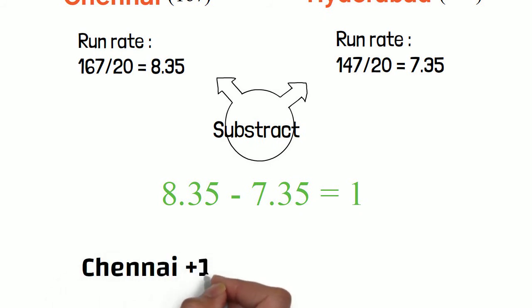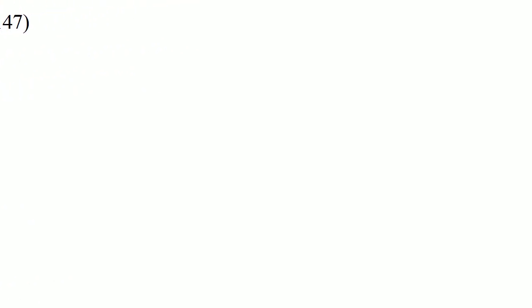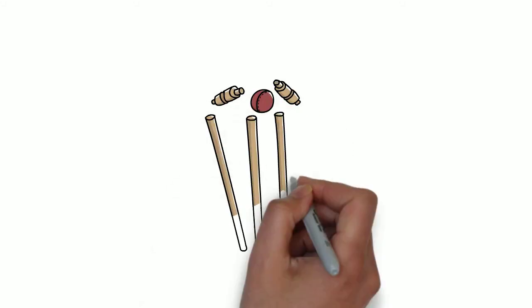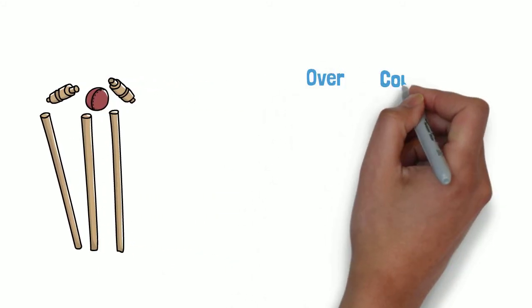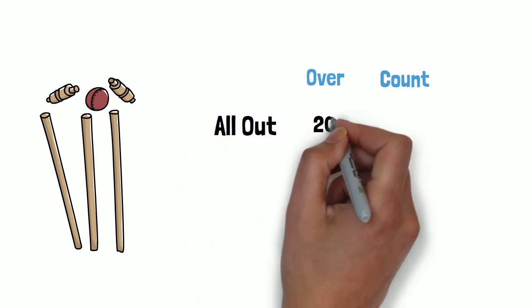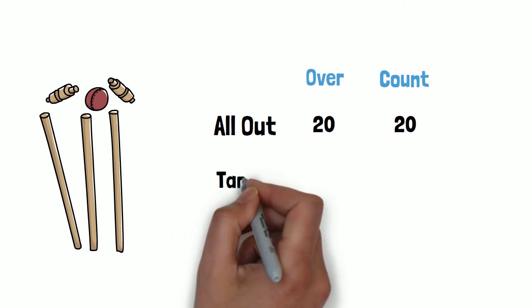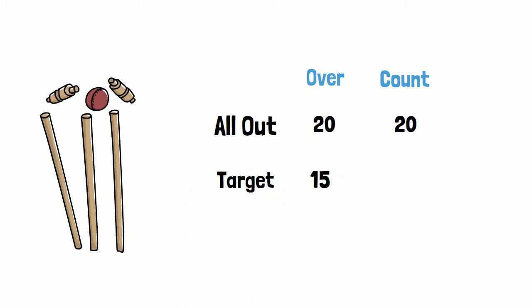So plus 1 will be added to Chennai's net run rate as they won the game, while minus 1 will be given to Hyderabad as they lost. A few important things to note: wickets falling do not count in this metric. If a team is all out before 20 overs, it will be counted as the full 20 overs, not how many overs they actually played. However, if a team chases down a target in 15 overs, then 15 overs will be counted, not 20.